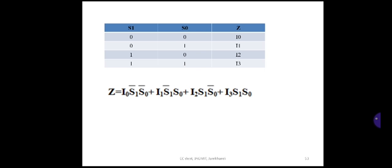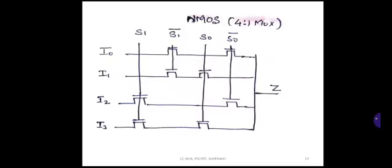Using the truth table, we can write the expression: z = i0·s1̄·s0̄ + i1·s1̄·s0 + i2·s1·s0̄ + i3·s1·s0. This is the expression for the multiplexer. This multiplexer can be implemented using pass transistors or transmission gates. The NMOS 4-to-1 multiplexer using a pass transistor is implemented in this schematic diagram using the above expression.